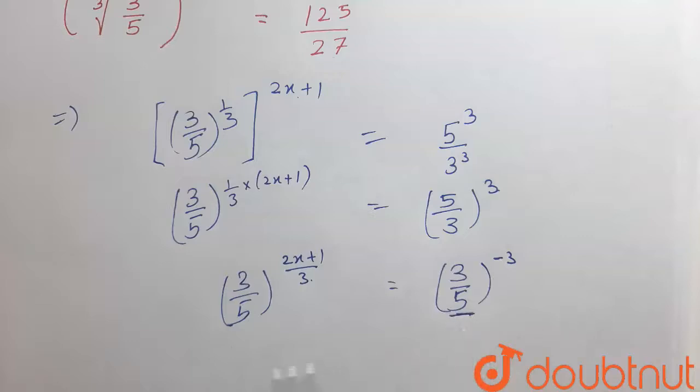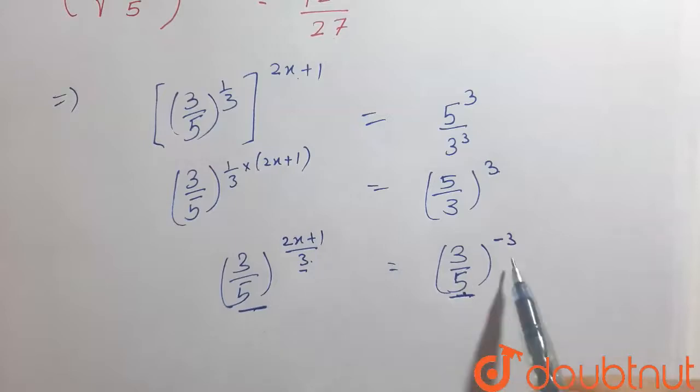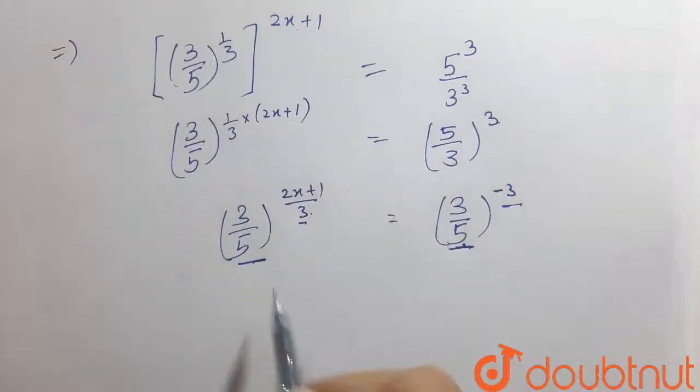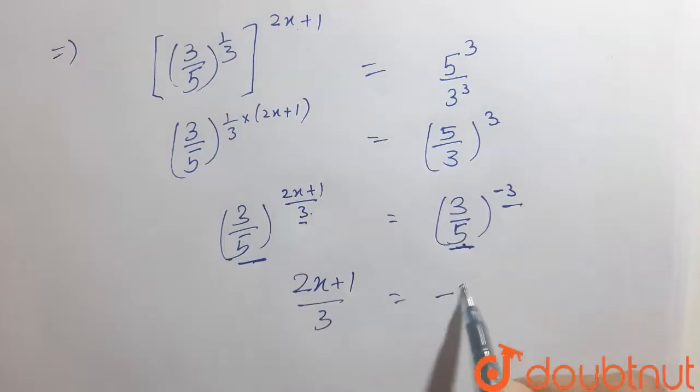Here we can see that the base of both left hand side and right hand side are the same. So the power is also the same. So comparing the powers, we have (2x plus 1) over 3 equals minus 3.